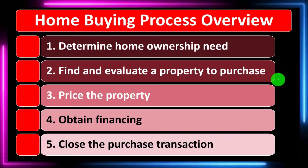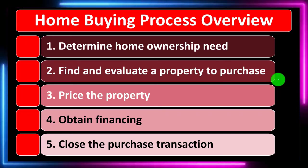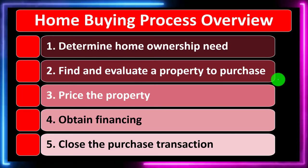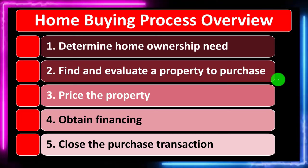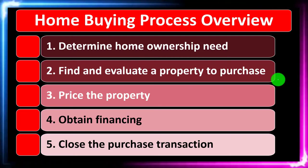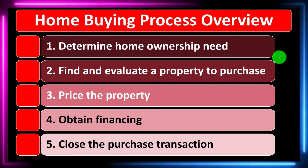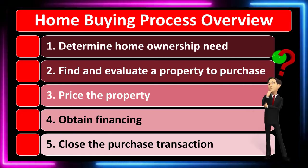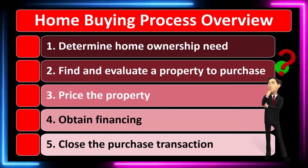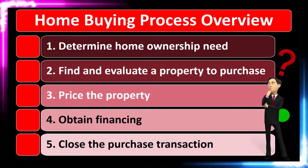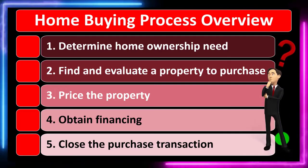For the long-term decisions, on the other hand, we have to use the adage of measure twice, cut once. We don't have the trial and error that we can use for short-term decision-making, and therefore we need a more formal process in place. So these are some of the steps: number one, determine home ownership need; number two, find and evaluate a property to purchase; number three, price the property; number four, obtain financing; number five, close the purchase transaction.